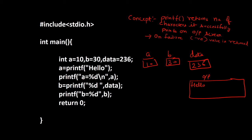There is a concept behind this question: printf is a function and it returns an integer value. Printf returns the number of characters it successfully prints on the output screen or console. Here, printf is printing 'hello' — h, e, l, l, o — that is five characters. So it returns that integer value and it will be stored inside 'a'. So 'a' will now contain 5, and the printf statement prints 'a equal to 5'.